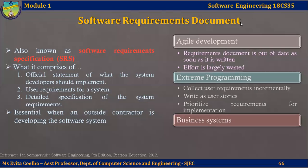In this lecture video, we are going to talk about the software requirements document. The software requirements document is sometimes called the software requirement specification, abbreviated as SRS. It is an official statement of what the system developers should implement — the exact features. It may also include user requirements for a system and the detailed specification of the system requirements.